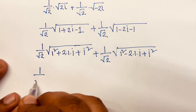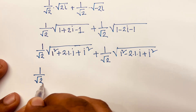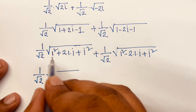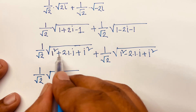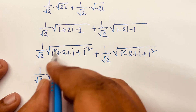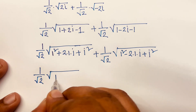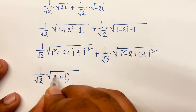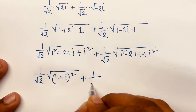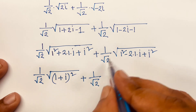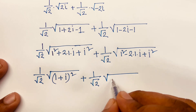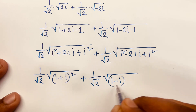Using the algebraic identity a² + 2ab + b² = (a + b)², we recognize the first expression as (1 + i)². So we get 1/√2 · √((1 + i)²) plus 1/√2 · √((1 − i)²).